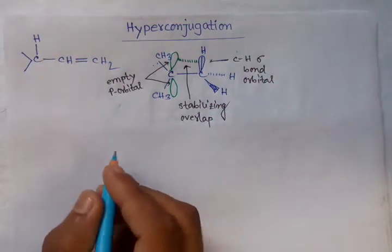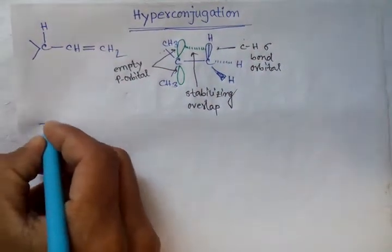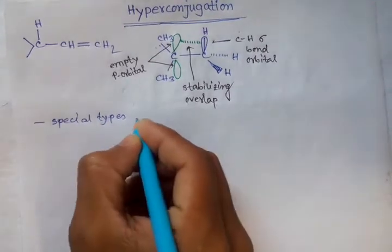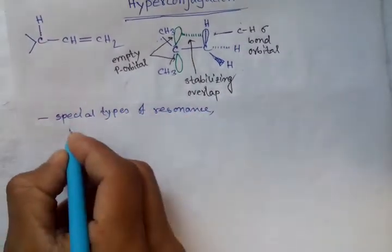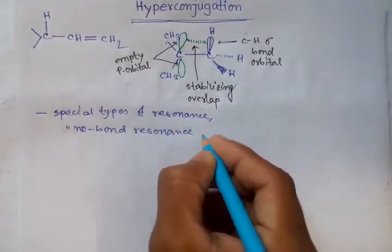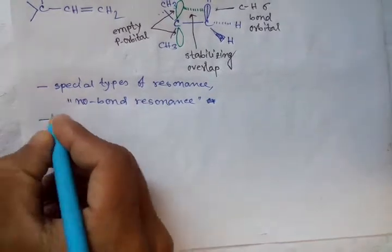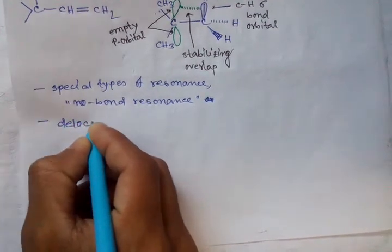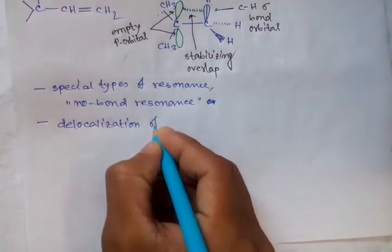Hello friends. Today I am going to discuss about the topic hyperconjugation. Hyperconjugation is a special type of resonance, called no-bond resonance, by the delocalization or conjugation of sigma electrons.